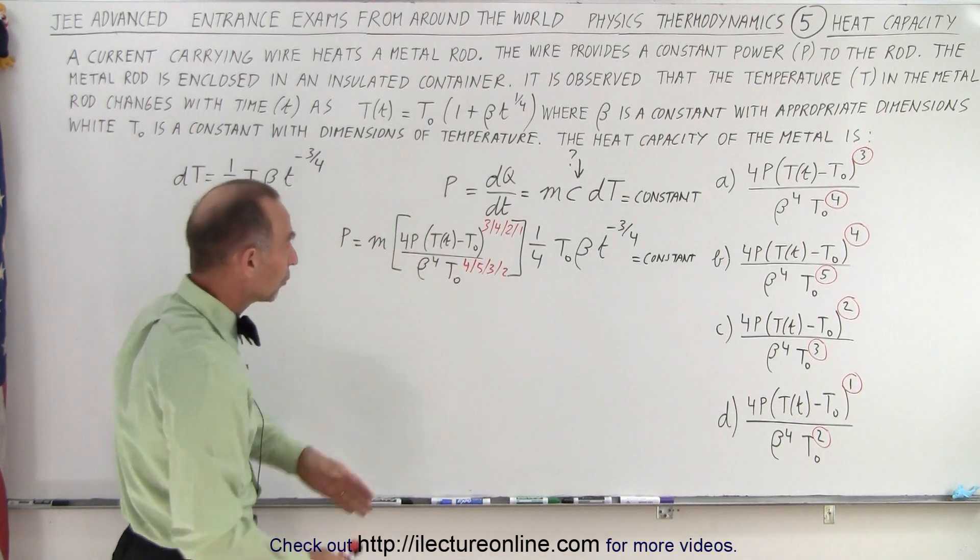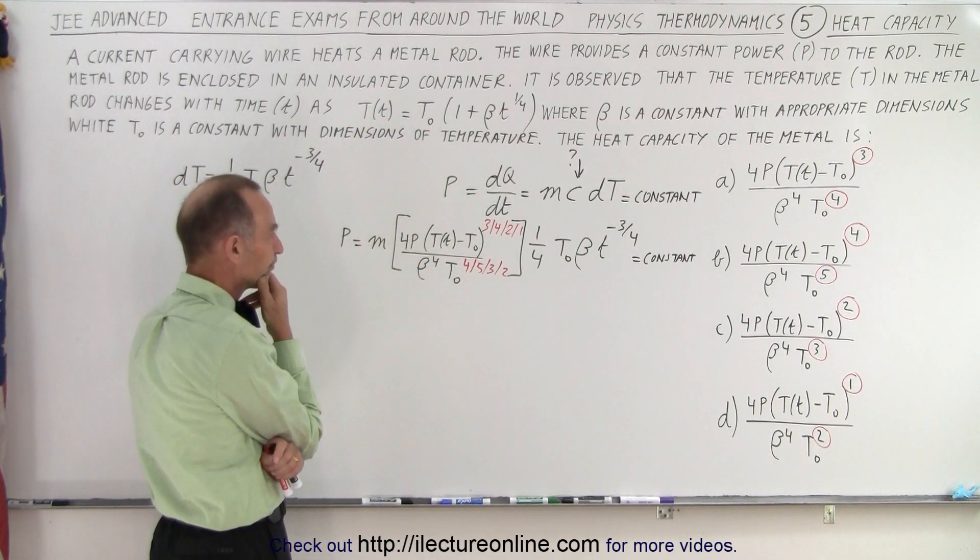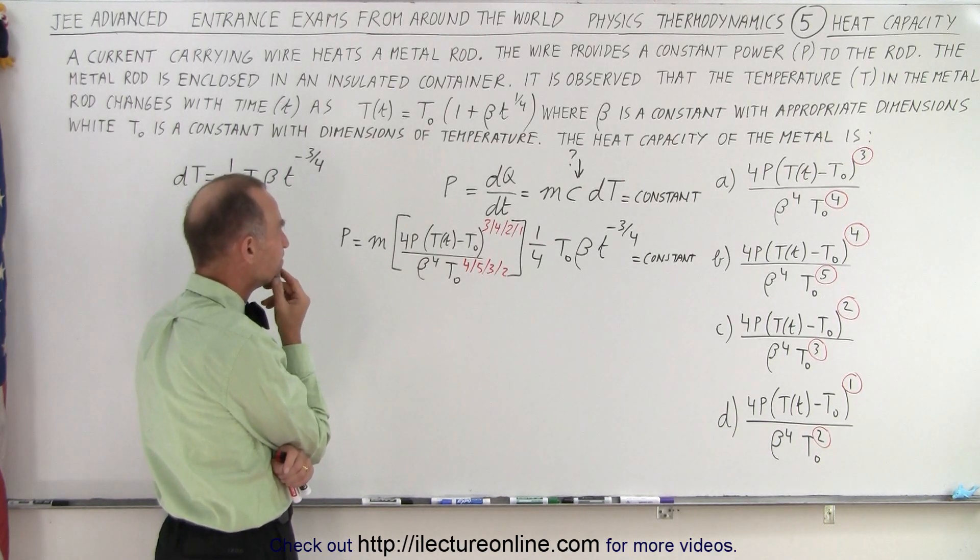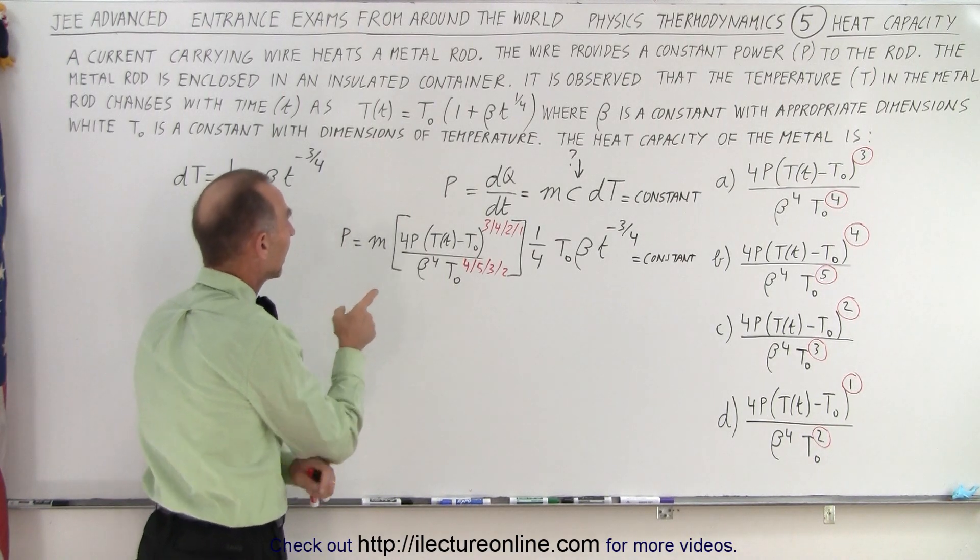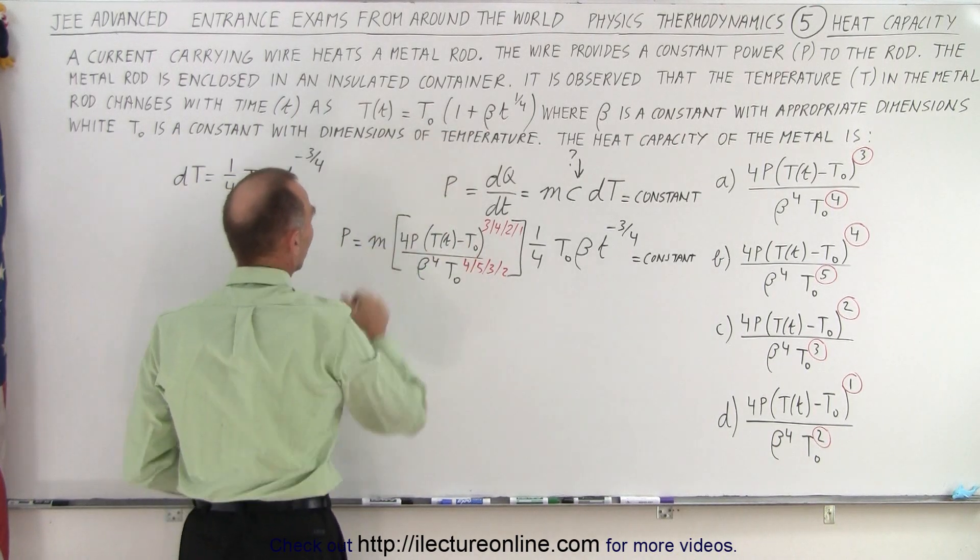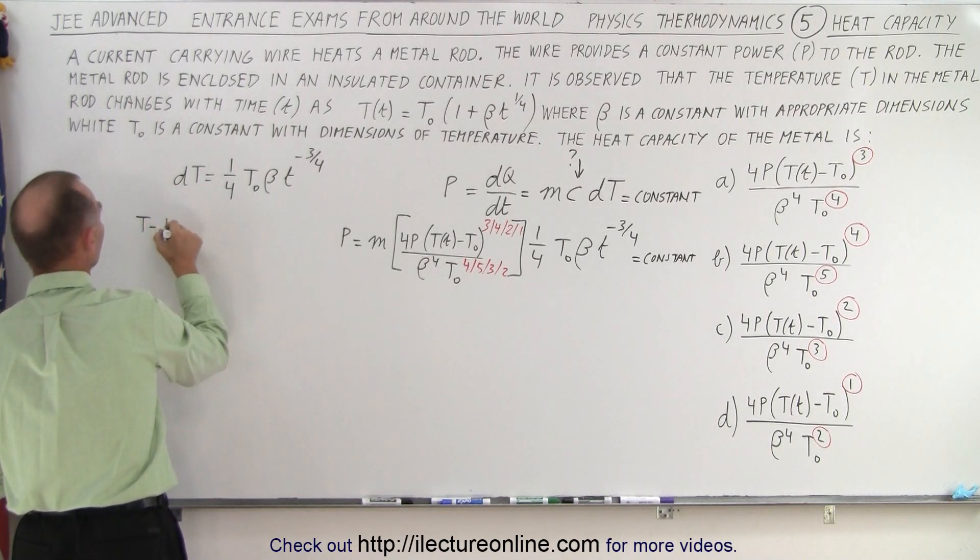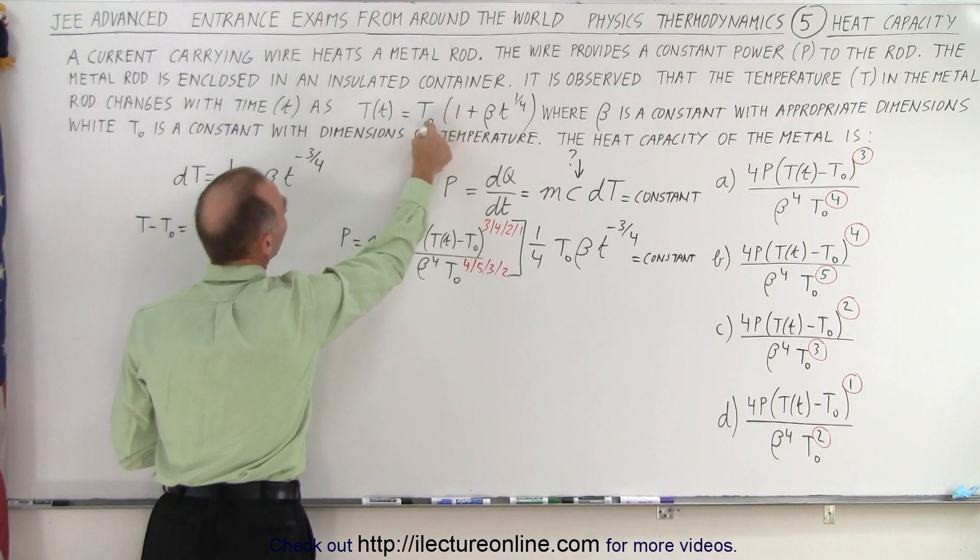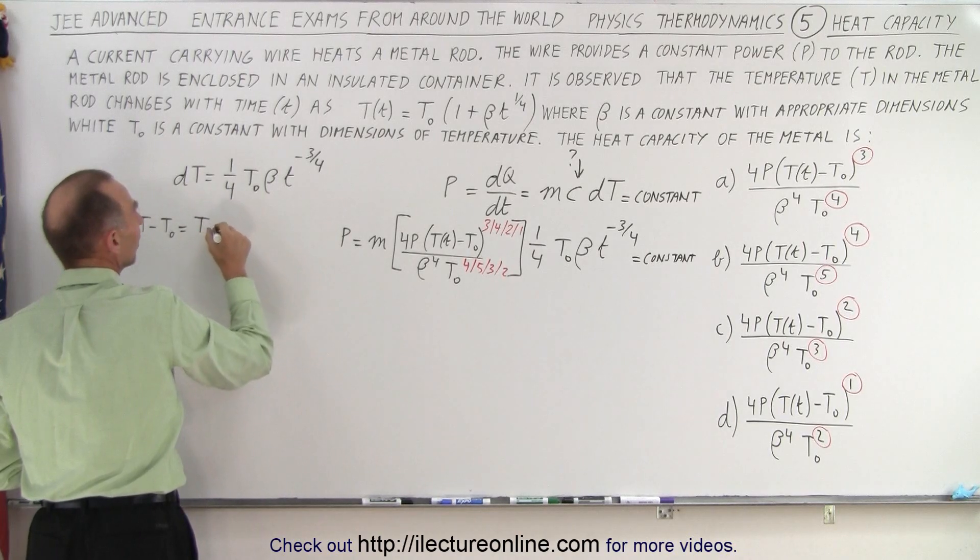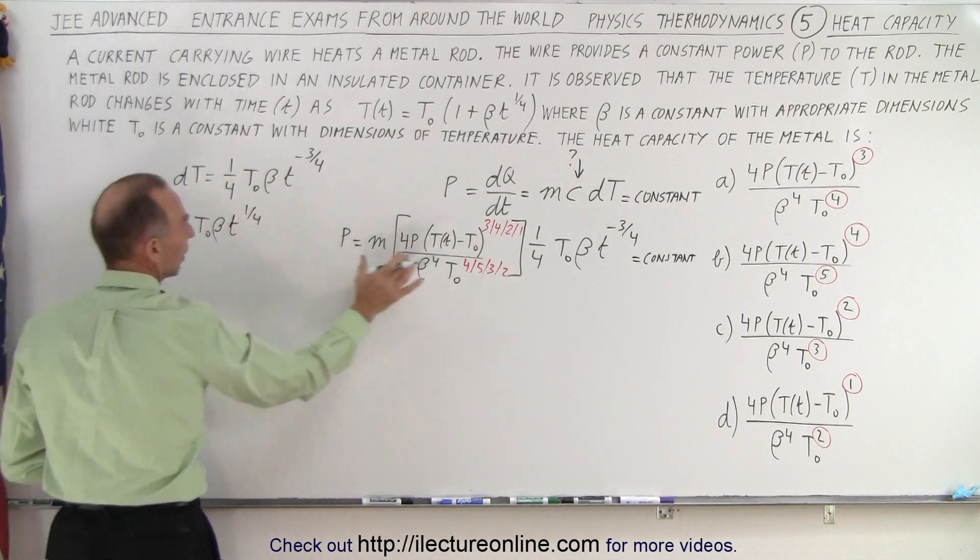Now which combination of exponents will make this a constant? Let's see here. Now notice I have T minus T sub naught, and what I can do is I can look at this equation and say, well, I can replace that by something else. I can say that T minus T sub naught is equal to, when I bring the one times T sub naught to the left side, I have left T sub naught times this on the right side. So that equals T sub naught times beta times t to the one fourth on the right side.